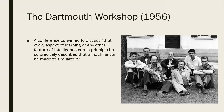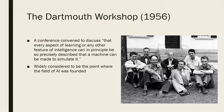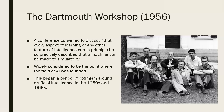In 1956, a lot of researchers came together to discuss the possibility of developing intelligent systems. The Dartmouth workshop became a conference which discussed that every aspect of learning or any other feature of intelligence can, in principle, be so precisely described that a machine can be made to simulate it. This is widely considered to be the point where the field of artificial intelligence was founded, and it began a period of optimism about artificial intelligence, which was very prominent in the 1950s and 1960s.